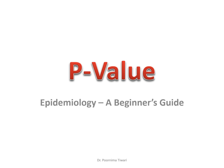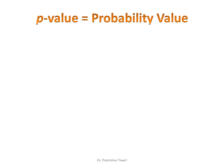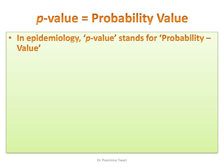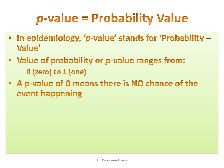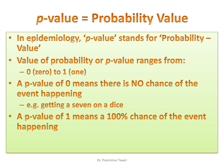One commonly comes across the term p-value. Today we will explain p-value in very simple language and make the meaning crystal clear to you. P-value is the short form for probability value. As we have known from previous knowledge, probability can range from 0 to 1. A p-value of 0 means there is no chance of the event happening — for example, getting a 7 on a 6-faced dice — and a p-value of 1 means there is a 100% chance of the event occurring, like the sun will rise from the east.